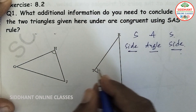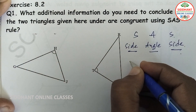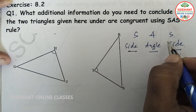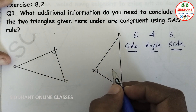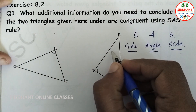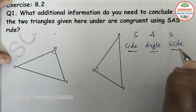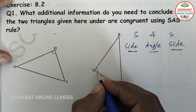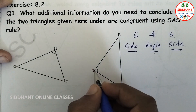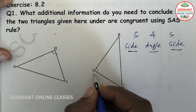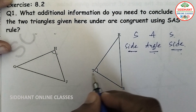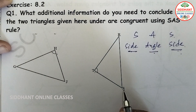The two triangles are given, but we need information about the angle and side to compare them. According to the SAS rule, when side equals side, angle equals angle, and side equals side, we can say the two triangles are congruent. However, the angles of T and H are not given, and we don't know whether side GH is equal to TR or TS.